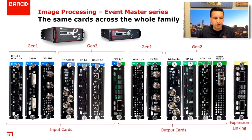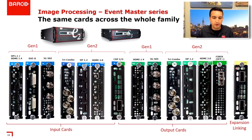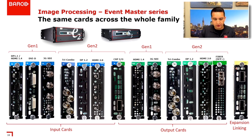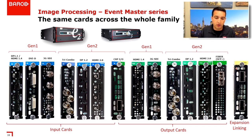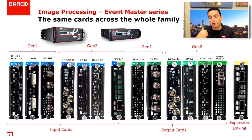The great thing about the E2, S3, EX, and ImagePro 4K — with a slight caveat — is that the E2, S3, and EX can all accept Gen 1 and Gen 2 cards. The ImagePro 4K can only accept Gen 2 cards. E2 Gen 2 can also accept Gen 1 cards, so don't be afraid to put a Gen 1 card in your E2 Gen 2. Gen 1 cards include DisplayPort 1.1, HDMI 1.4 Duo Combo, DBID, and 3G SDI cards. Gen 2 cards include the Tri Combo In with DP 1.2, HDMI 2.0, 12G SDI, Quad DP 1.2, Quad HDMI 2.0, and the CXPIO card.